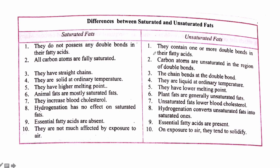Comparing saturated and unsaturated fats: saturated fats do not possess double bonds while unsaturated have one or more. All carbon atoms are fully saturated in saturated fats; unsaturated fats have bent chains at the double bond. Saturated fats are solid at room temperature while unsaturated fats are liquid at ordinary temperature. Saturated fats have higher melting point while unsaturated fats have lower melting point. Animal fats are mostly saturated; plant fats are generally unsaturated.